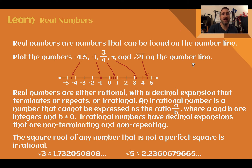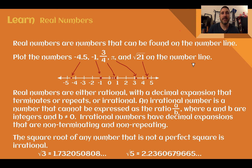Within the set of real numbers, they can either be rational — which means the decimal expansion either terminates or repeats — or irrational. An irrational number cannot be expressed as the ratio a over b, or as a fraction, where a and b are integers and b can't be zero. Irrational numbers have decimal expansions that are non-terminating and non-repeating; they go on forever and ever. The square root of any number that is not a perfect square is irrational. We'll look closer at how to tell if something is rational or irrational in the upcoming examples.